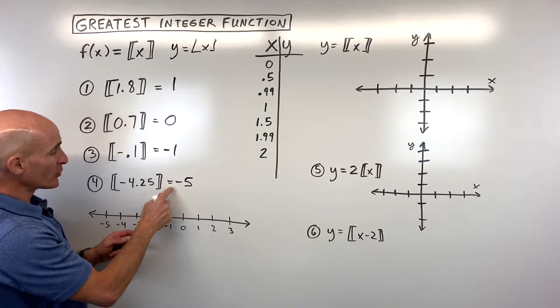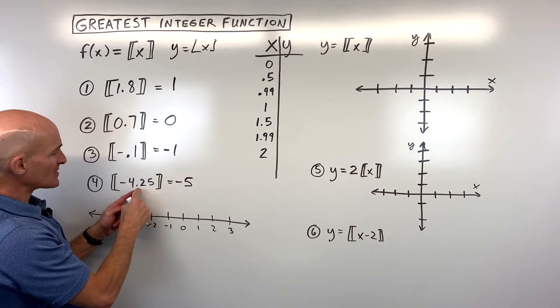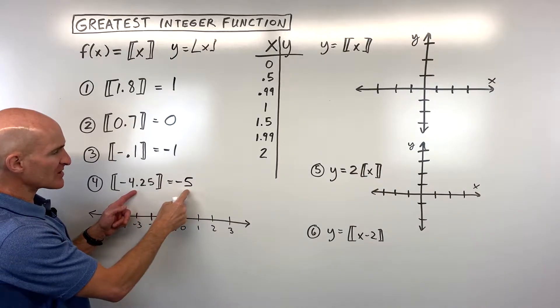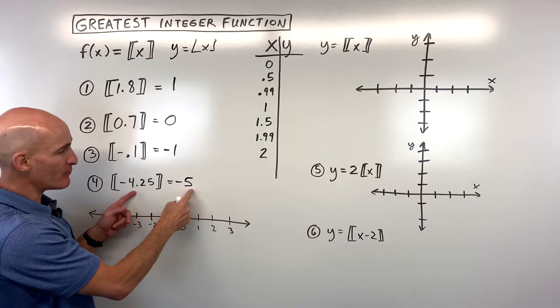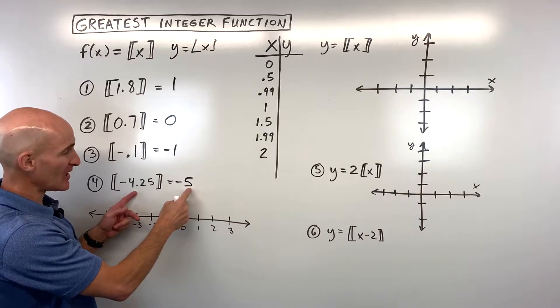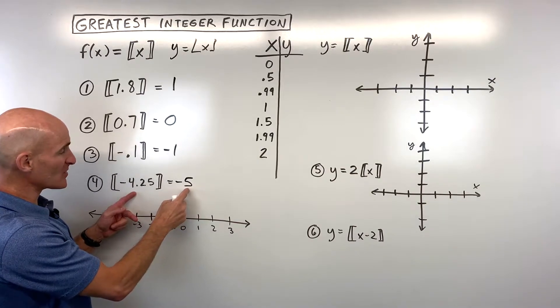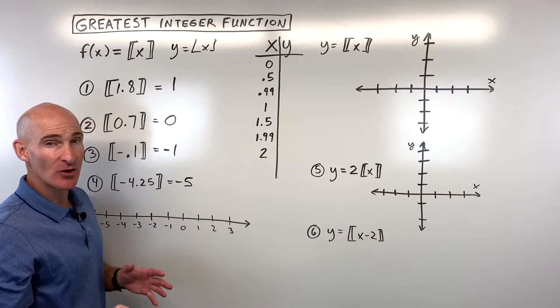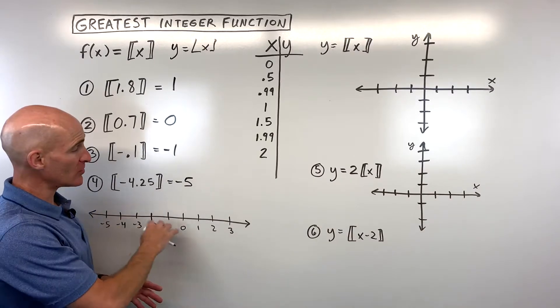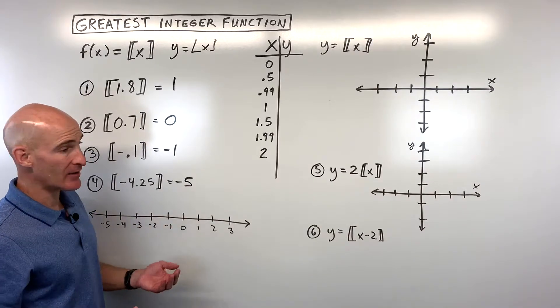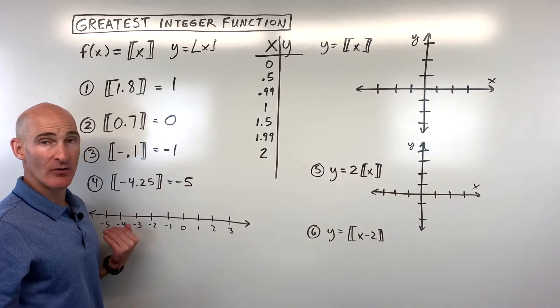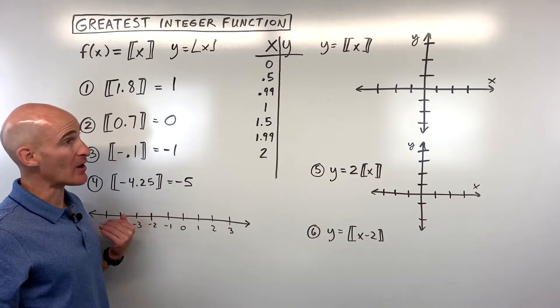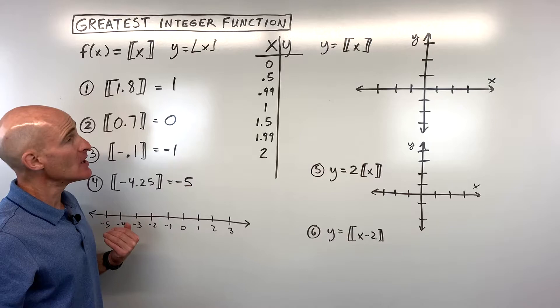It's a little confusing because you might say, negative 4.25, but this number actually got bigger — it became 5, but it was a bigger negative number. We're actually rounding to the left. So if you're not sure, go ahead and draw the number line and think about rounding down or rounding to the left.